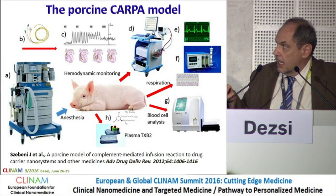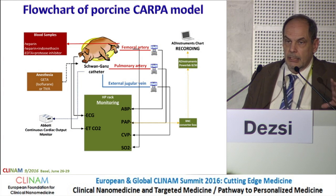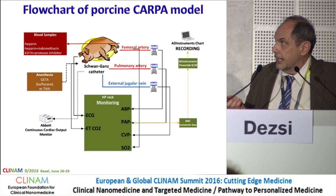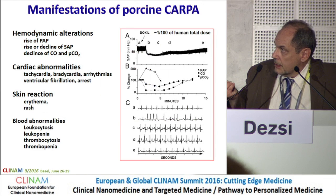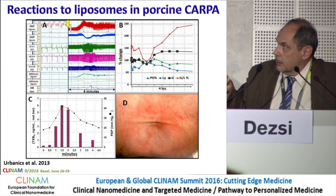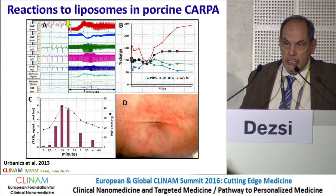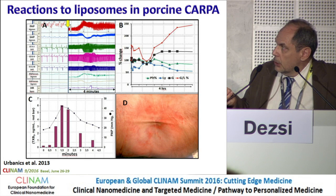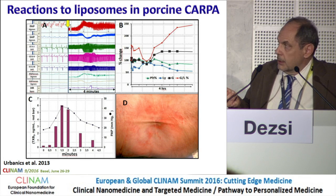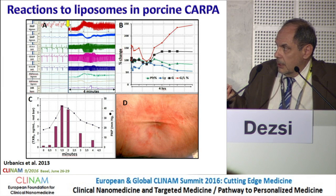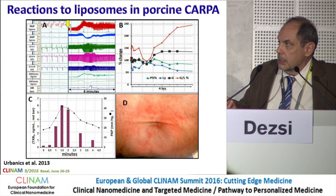I will skip most of the CARPA model flow chart since Janos already showed it. The most important parameter in CARPA is the measurement of pulmonary arterial pressure, as this is the most sensitive parameter. Here you can see an original recording: the topmost curve shows an immediate and huge increase in pulmonary arterial pressure in response to a nanomedicine injection. You can also see changes in leukocytes — leukocytosis followed by leukopenia — and thrombocytopenia.